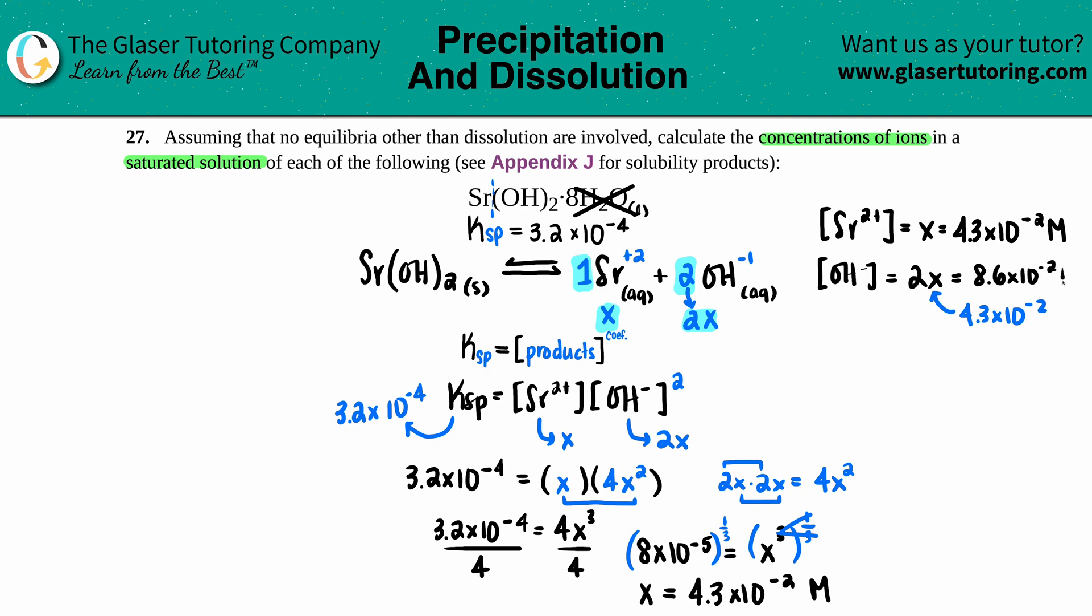So what is this? 8.6 times 10 to the negative second molarity. And there are your two concentration values, one and two, and done.